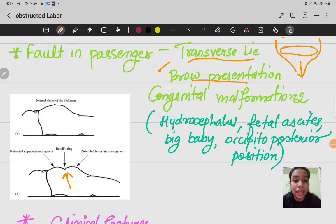Next is congenital malformations like hydrocephalus. In hydrocephalus, the baby's head is large in size and the baby's body is smaller in size. Because the head is big, the head cannot come out of the canal during delivery.